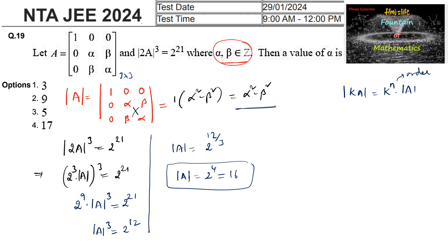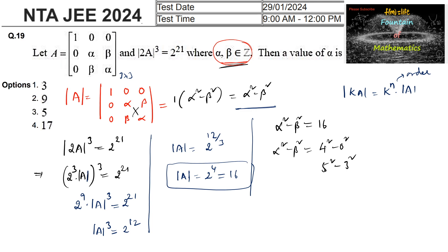Since det(A) = α² - β² = 16 and α, β are integers, the possible solutions are 4² - 0² = 16, giving α = 4, β = 0, or 5² - 3² = 16, giving α = 5, β = 3. The value of α can be 5, which corresponds to option C.